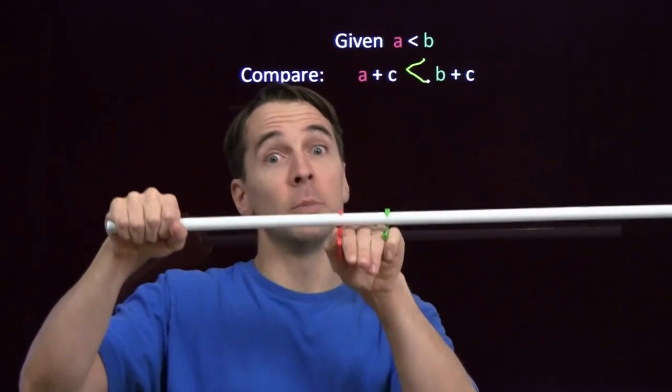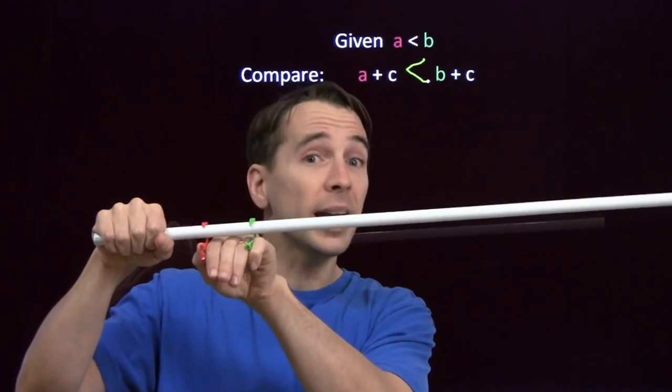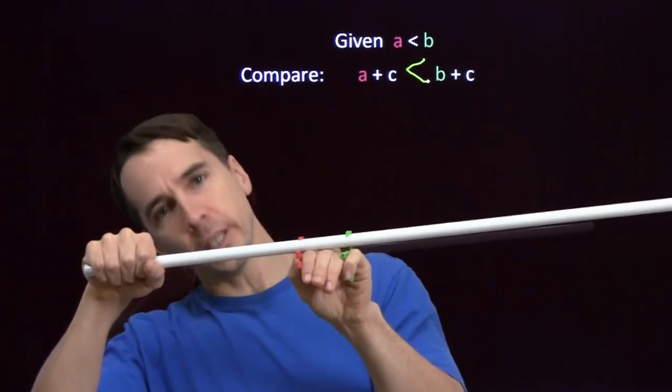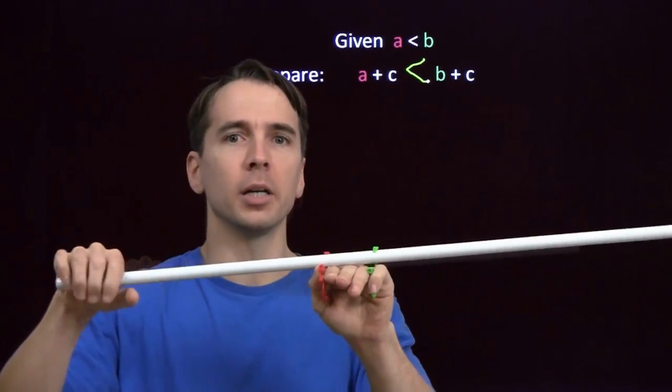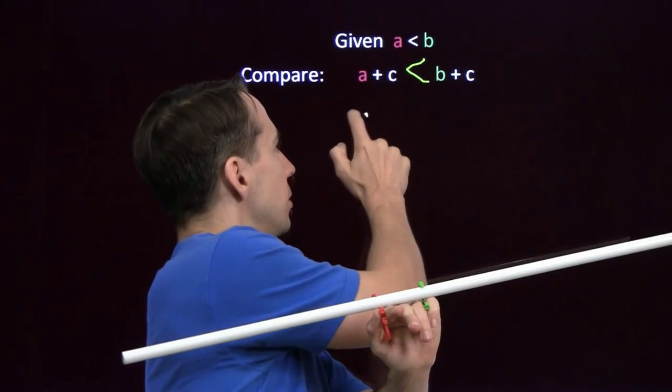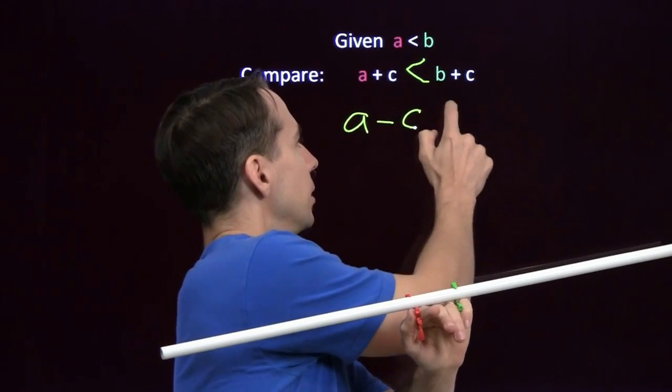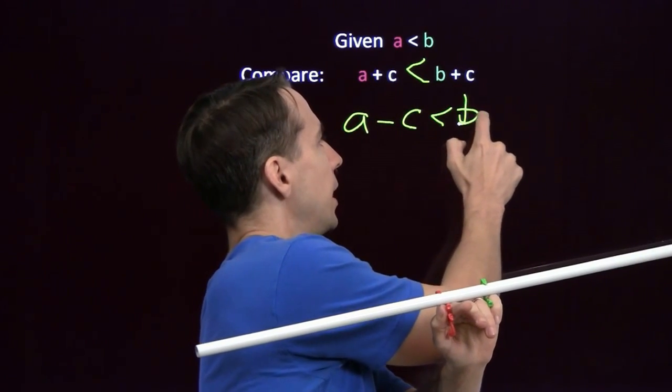Now, I could have shifted them to the left instead of to the right. I could have started here and shifted them c to the left. I could be subtracting c from both. And again, the red monkey will still end up to the left of the green monkey. And that tells us that a minus c is less than b minus c.